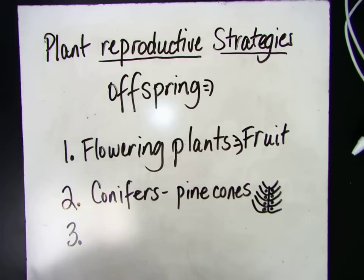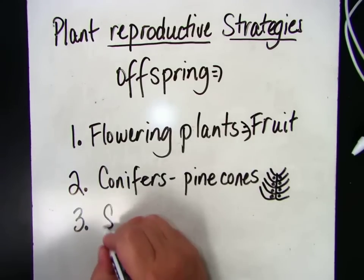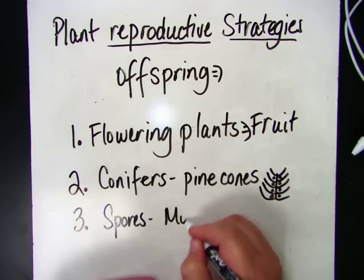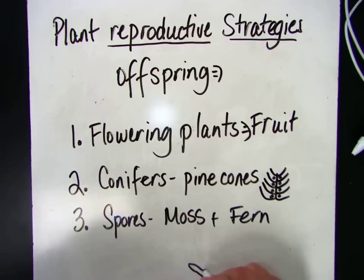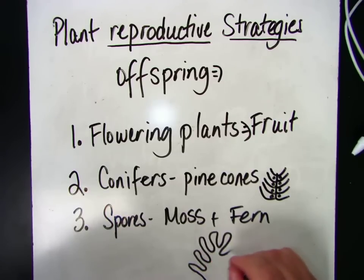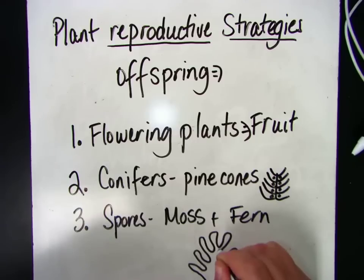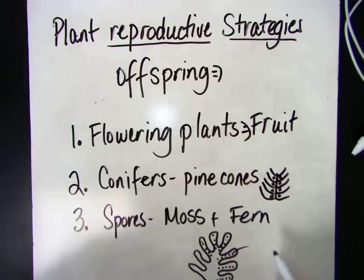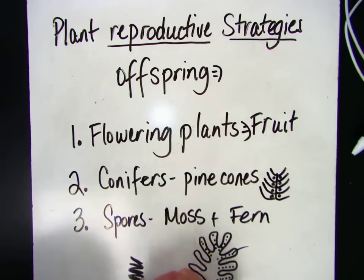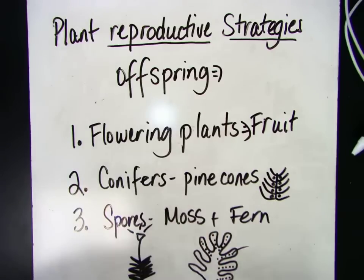The third reproductive strategy is spores, which are made from mosses and ferns. If you remember, we saw a fern leaf that had all the little spores all along it. Those spores actually get flung from the moss leaf or the fern leaf and create a new plant. We also talked about how the spores actually get shot out from the moss.